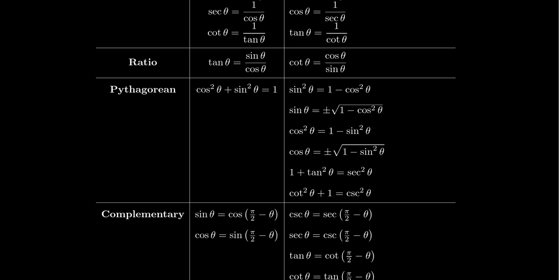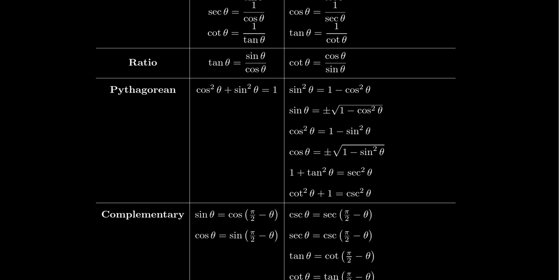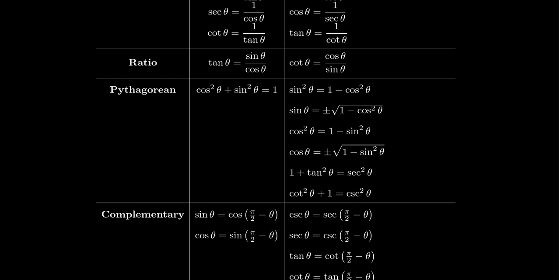If you take the Pythagorean identity and want to solve for sin² θ, just subtract cos² θ from both sides: sin² θ = 1 − cos² θ. This identity tells us that a difference of squares, 1 − cos² θ, can actually be turned into a perfect square, sin² θ. If you take the square root of both sides, you get sin θ = ± √(1 − cos² θ), where the plus or minus depends on which quadrant we're in. This means we can write sine as some combination of cosine.